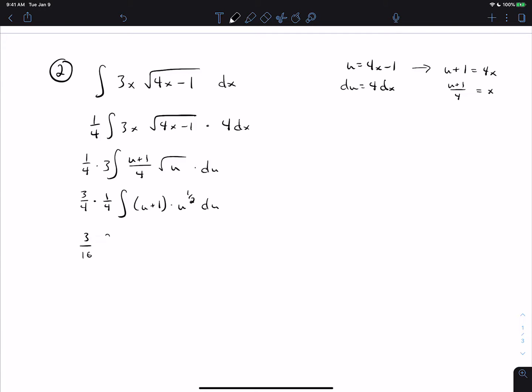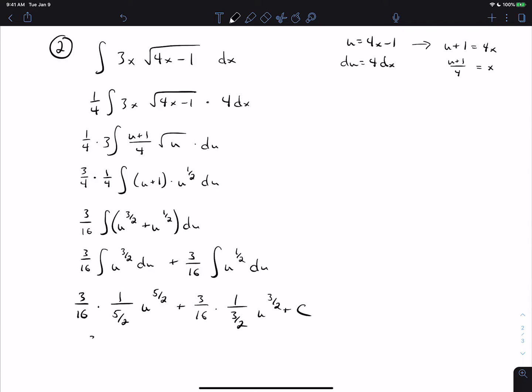Now if I distribute the u to the 1 half, I can split this into two integrals, and the problem works. So I get 3 16th integral u to the 3 halves plus u to the 1 half du. I split that into two problems and do the power rule on both. That gets us, let's see, so 3 over 40 times 4x minus 1 to the 5 halves.